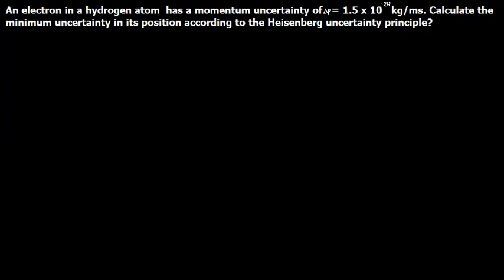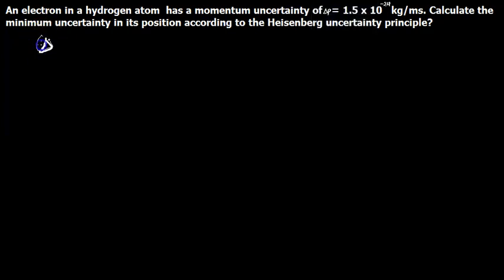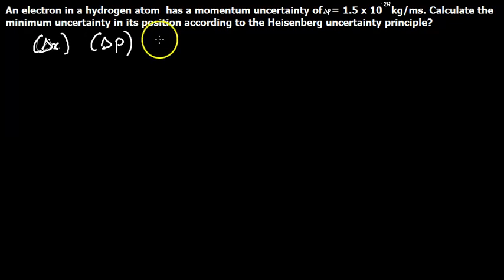How can we solve this problem? According to the Heisenberg uncertainty principle, the product of the uncertainty in position, which is dx, and the uncertainty in the momentum, which is dp — where momentum is the product of mass and the velocity of the body — is greater than or equal to h-bar divided by 2, where h-bar is the reduced Planck constant.